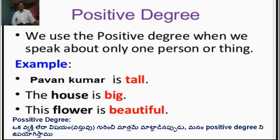In detail about positive degree: we use the positive degree when we speak about only one person or one thing. For example: The house is big. This flower is beautiful.